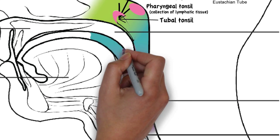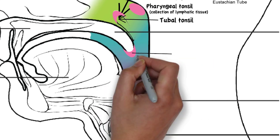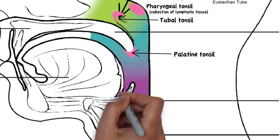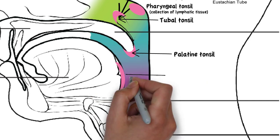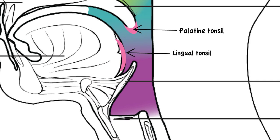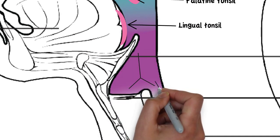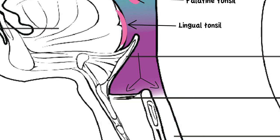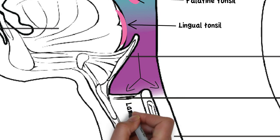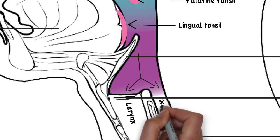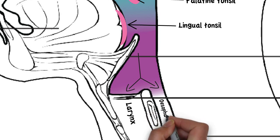The oropharynx contains the palatine tonsils and the lingual tonsils. The laryngopharynx, which is also called the hypopharynx, is where the pharynx divides anteriorly to the larynx and posteriorly into the esophagus.